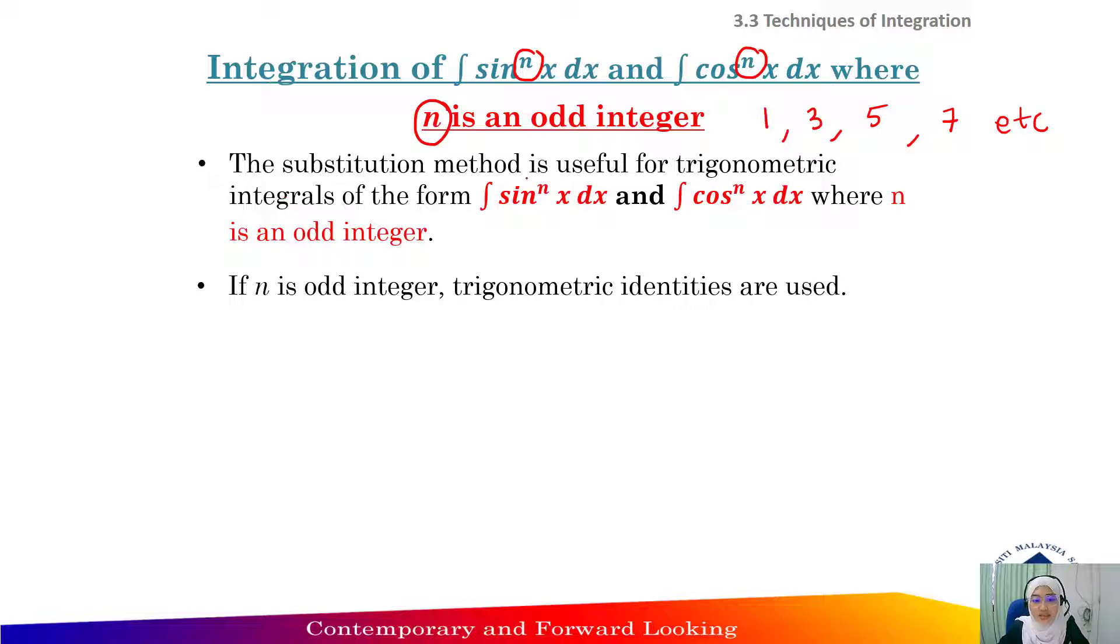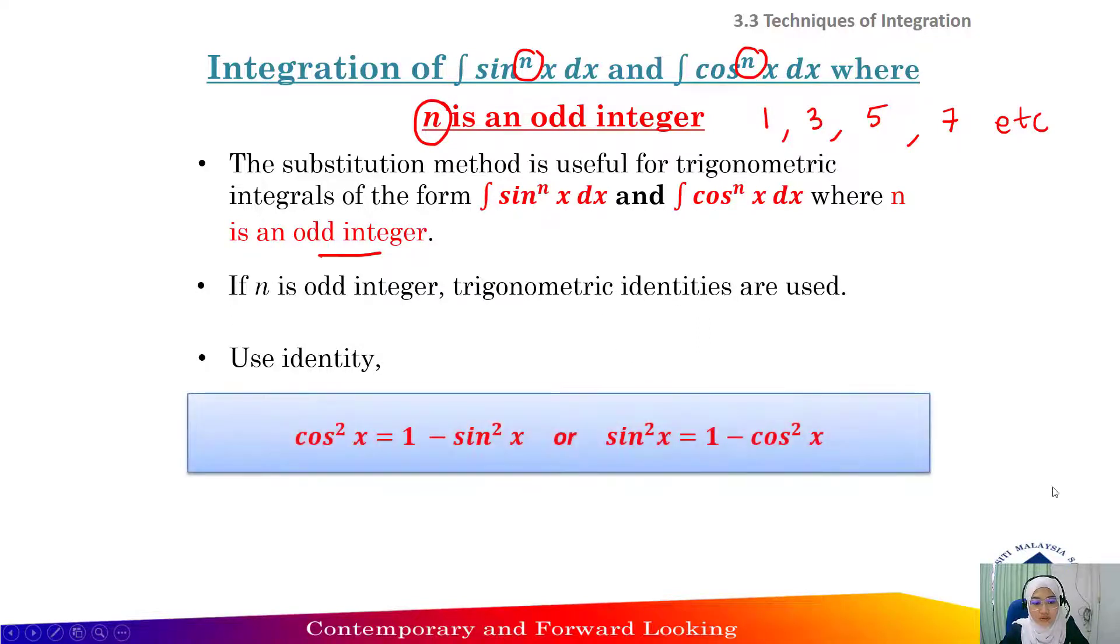The substitution method is useful for trigonometric integrals of the form sin x to the power of n and cos x to the power of n where n is an odd integer. Let's say if the n, the power is equal to 1, 3, 5, 7, and so on, trigonometric identities are used. So we will use this trigonometric identities.